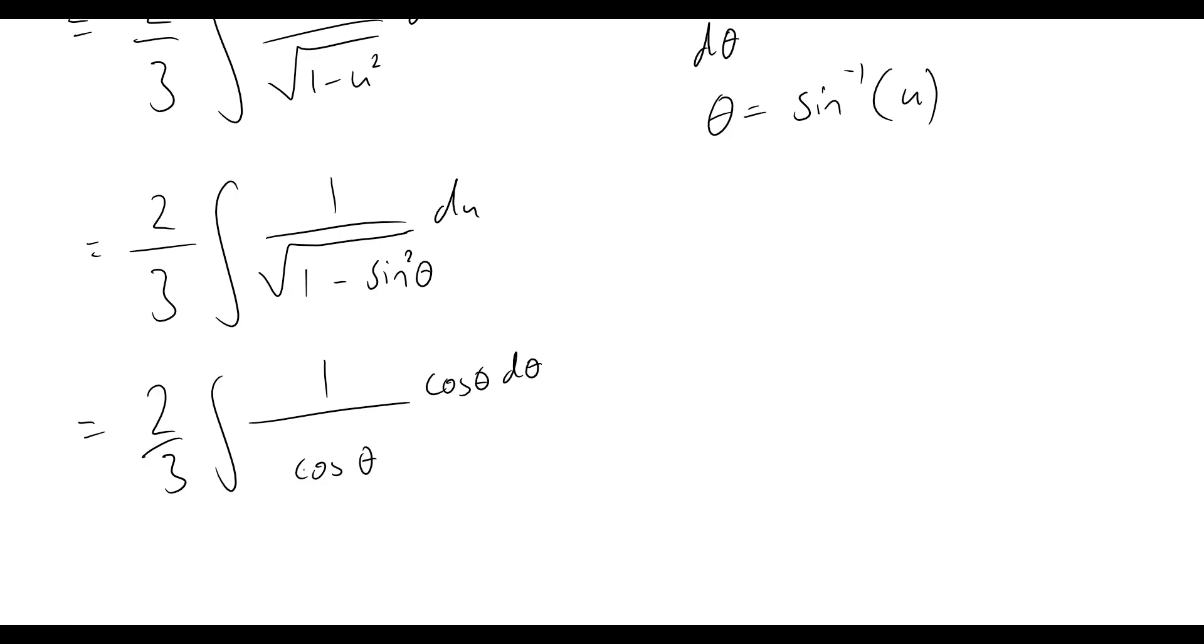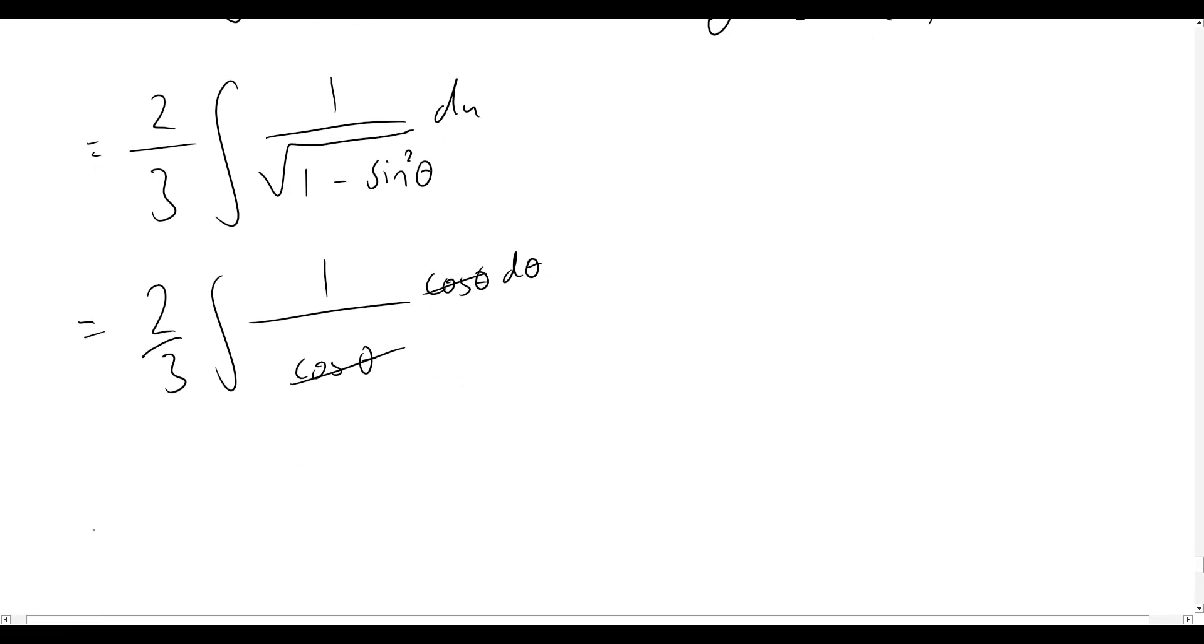And so square root of cos squared theta, well that's simply going to become cos theta. And so now we see cos theta on top and bottom, so those will cancel out, and our problem now just becomes 2/3 times the integral of 1 dθ.